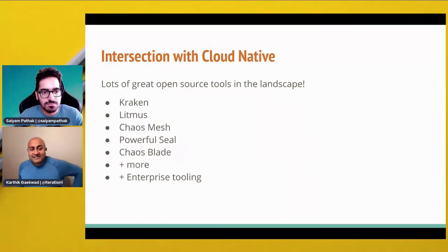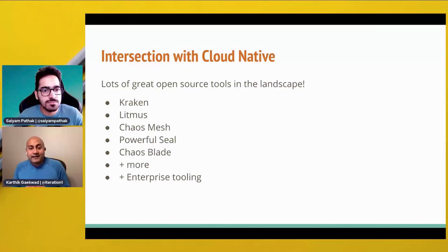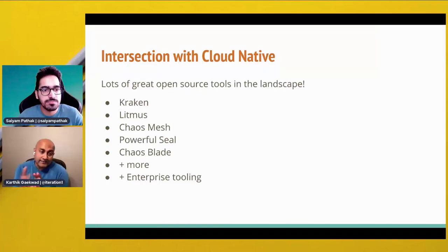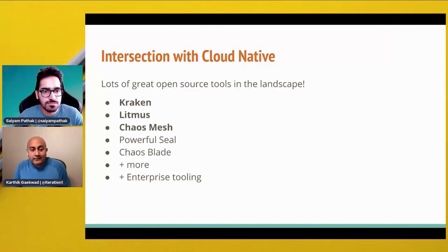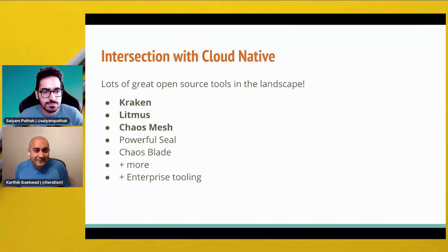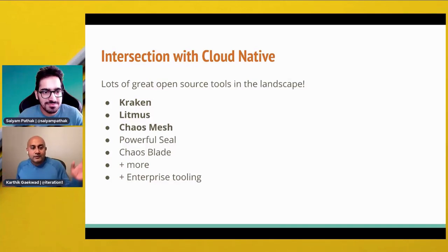So what's the intersection of chaos engineering theory with cloud-native? The coolest thing about cloud-native is that we're in a rich ecosystem with a lot of great open source tools in the landscape. Some of them are Kraken, Litmus, and Chaos Mesh, and there are a whole bunch of others as well, including enterprise tooling. For the purposes of this presentation, we'll focus on the first three, because realistically we only have about 25 minutes.